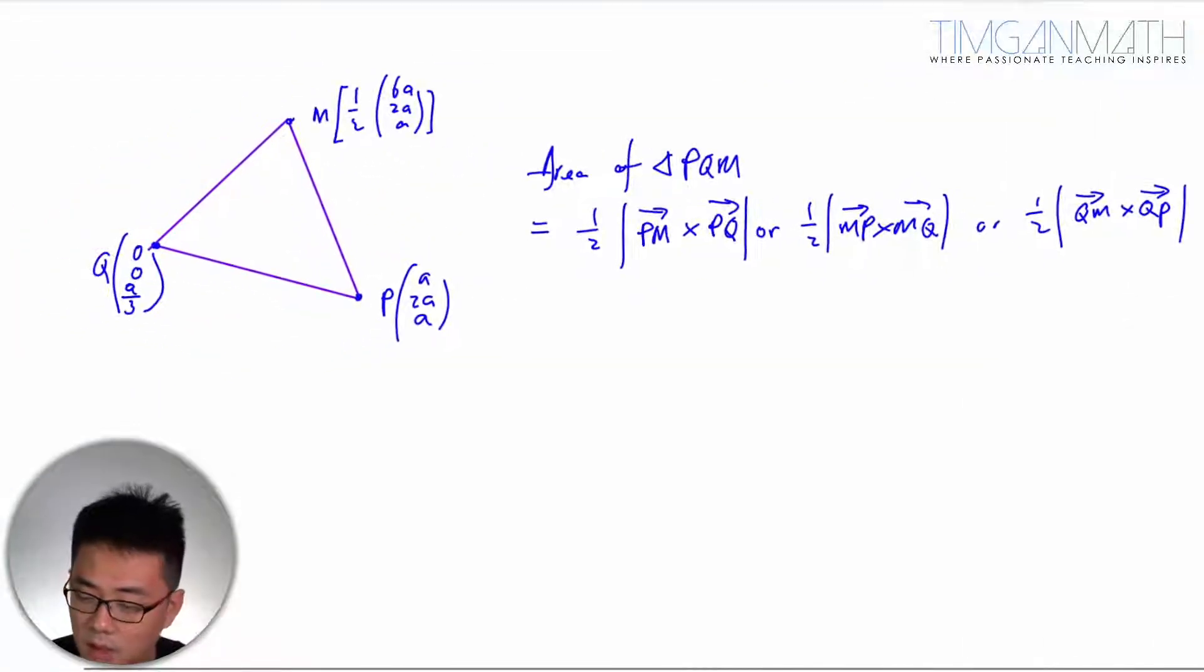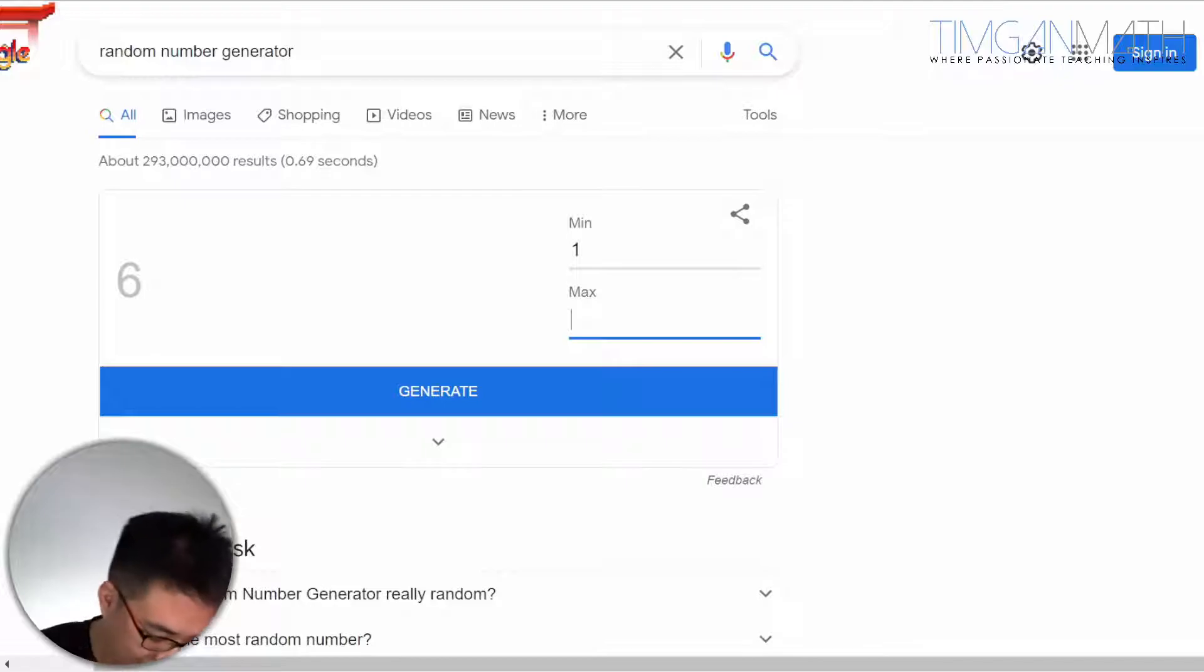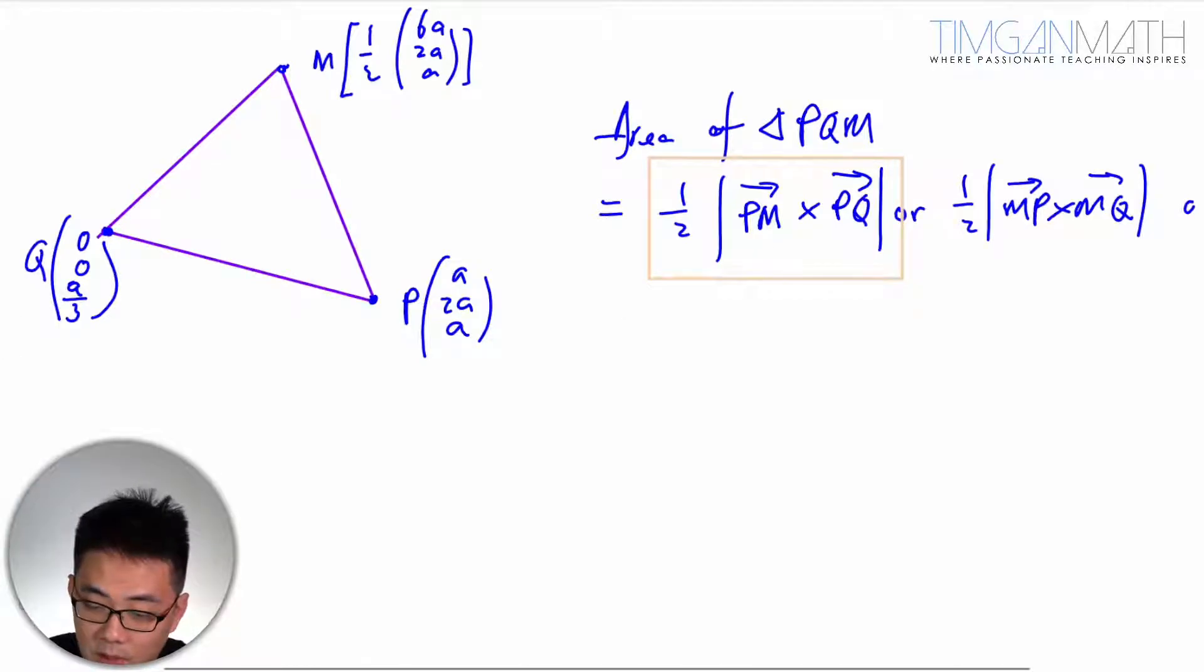It really doesn't matter. So typically what I'll do is I'm just going to randomly pick a number up. Pick one of it. I'm just going to use Google number random generator. So here, what I'm going to do is actually just 1, 2, 3. I'm going to randomize it, just generate, and pick the first equation. So I'm going to use this. It really doesn't matter which one you pick.